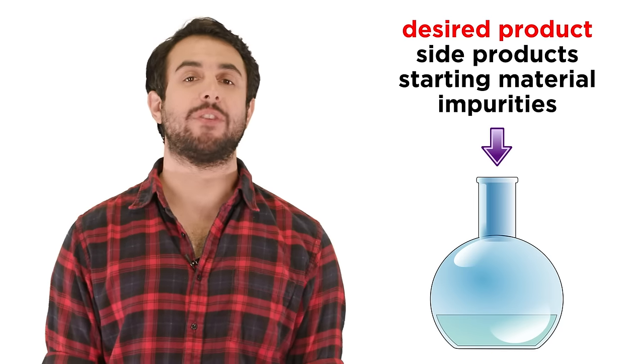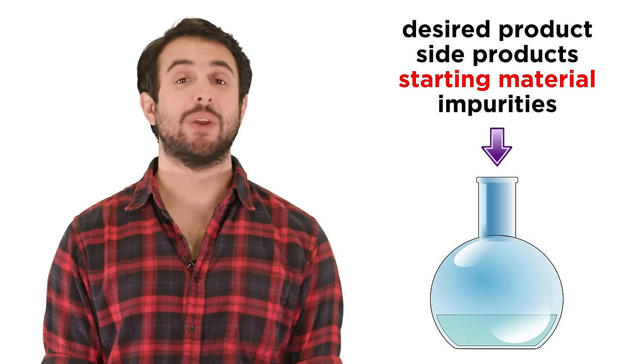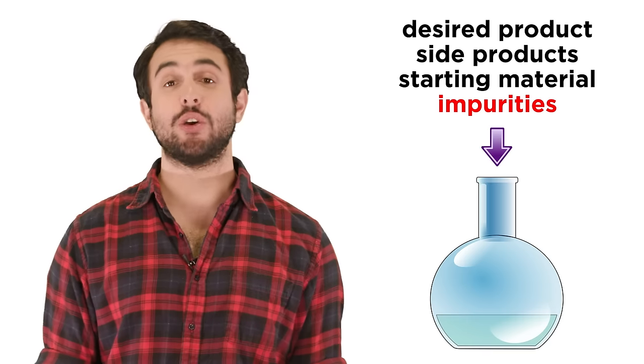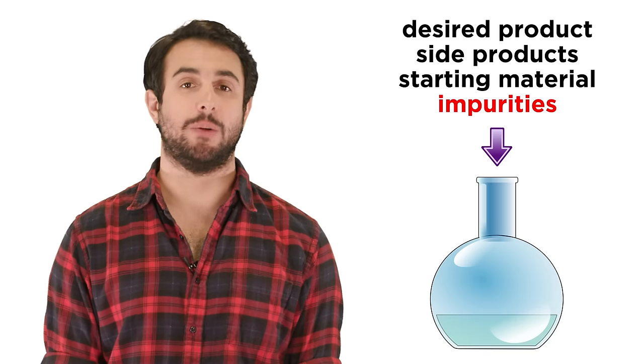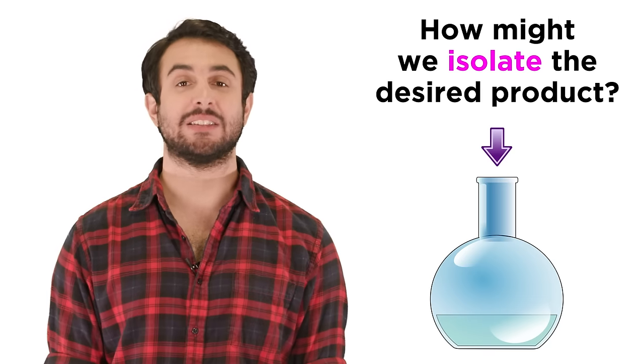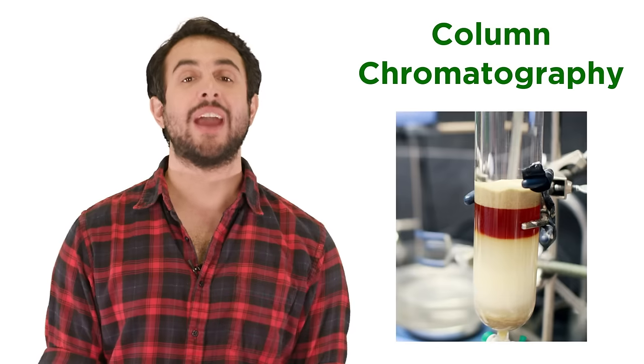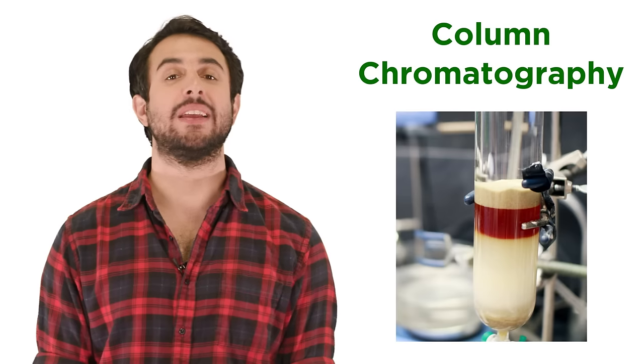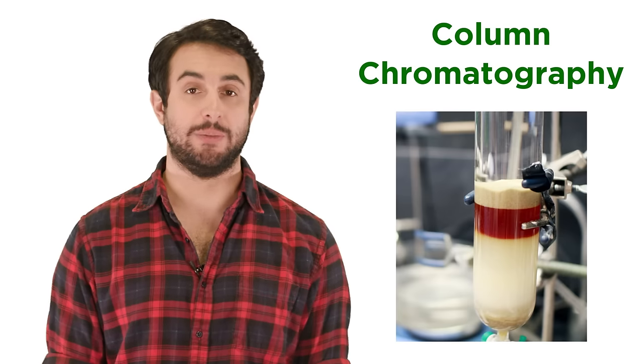When we do chemistry in the lab, it's never as neat and tidy as it is on paper. Any reaction will have unwanted side products, unreacted starting material, and other impurities in the product mixture. We need a way to separate everything so that we can isolate the desired product. And often times, that way is column chromatography.